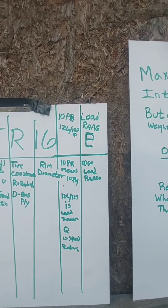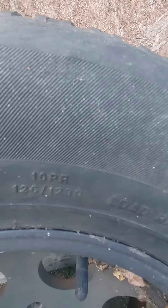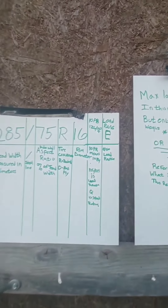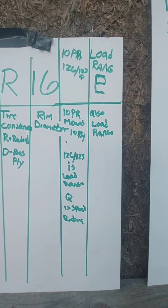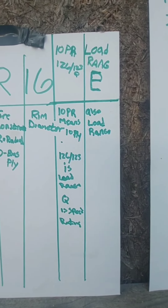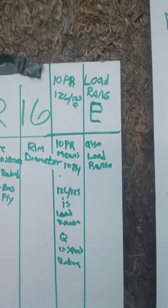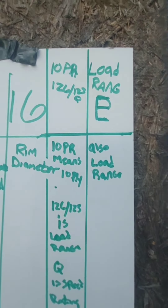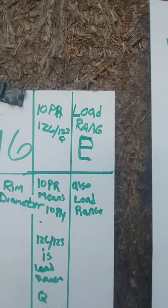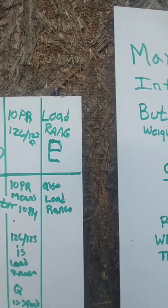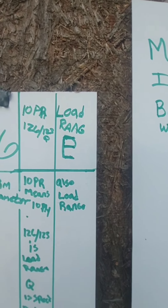The next bunch of numbers can be a bit confusing. On this tire alongside the 285 75 R16, we have 10 PR 126 123 Q — that is your metric weight and speed rating. Q is your speed rating; you can look up online what each letter means. The higher the letter, the faster the speed rating. 10 PR means 10 ply, and the 126 and 123 have different classifications for the actual weight rating.